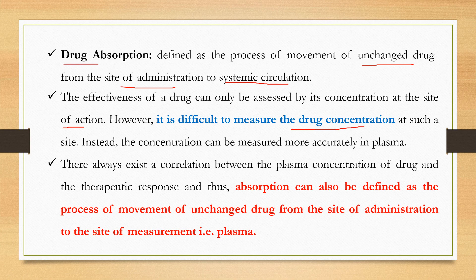It is difficult to find out the concentration of any drug at the site of action; instead, concentration can be measured more accurately in plasma. There always exists a correlation between the plasma concentration of a drug and the therapeutic response. Thus, absorption can also be defined as the process of movement of unchanged drug from the site of administration to the site of measurement — that is, the plasma.